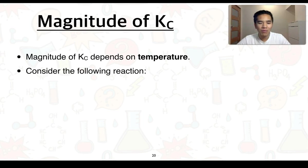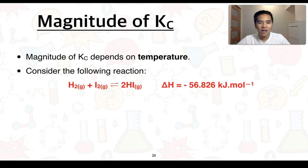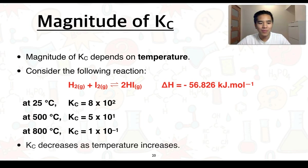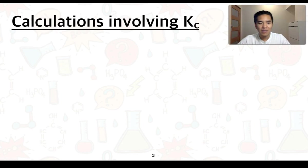One other thing to consider is that the magnitude of Kc depends on temperature. For the production of hydrogen iodide — given a negative enthalpy change — at 25°C the Kc value is 8×10², at 500°C Kc is 5×10¹, and at 800°C Kc is 1×10⁻¹. We can see that Kc decreases as temperature increases. Why this occurs will be covered in a later video on Le Chatelier's principle.